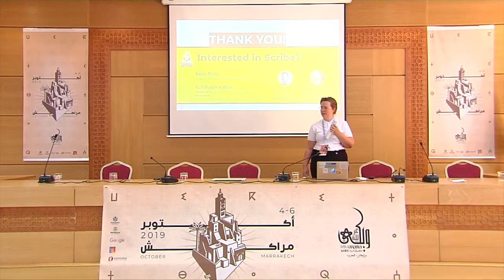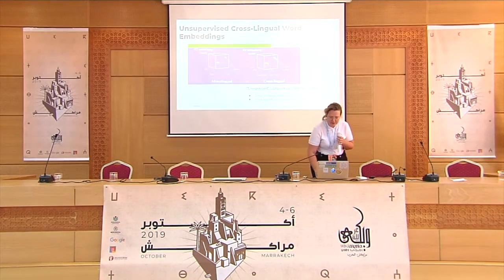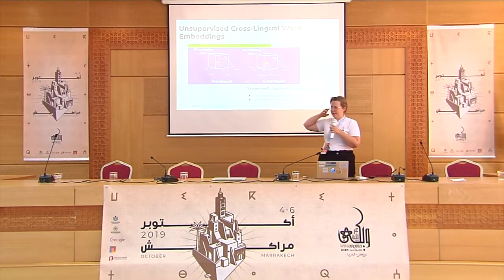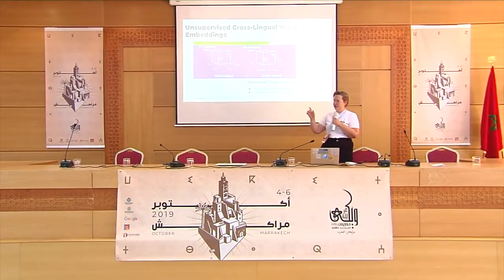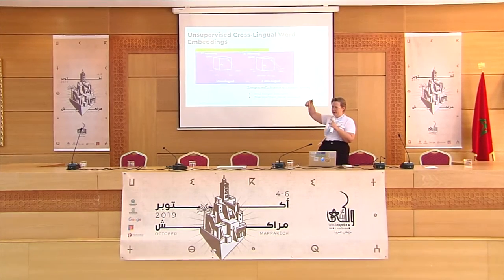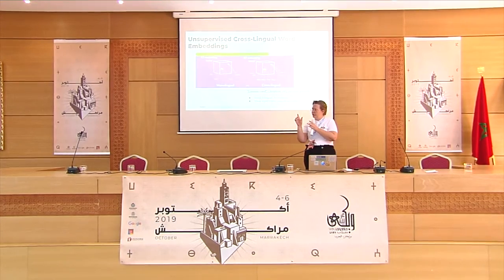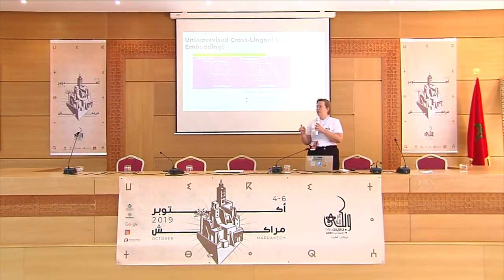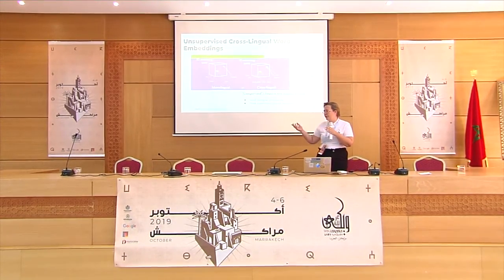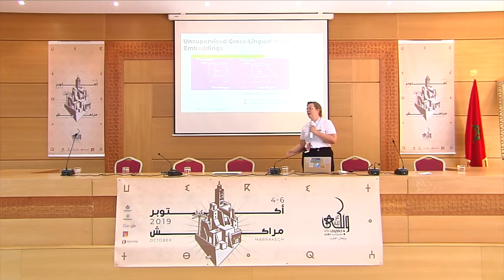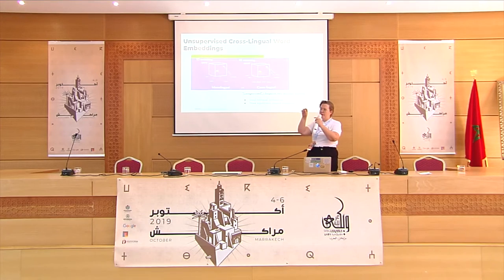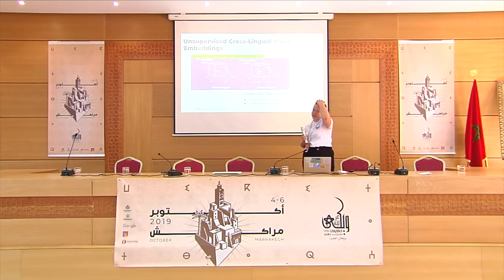Could you say a little more about that 3D mapping model — how one language can be used to help another? When you do word embeddings, you take text and learn how words relate to each other, and you display this relationship in a vector space — basically a 3D model. You do this for two separate languages. You then lay them on top of each other, aligning them using some form of bilingual dictionary as a starting point — that's the missing piece. Once you have that, you can align all the words you've trained on, using collocations and knowing which words should be close to each other, and then map all surrounding words accordingly.